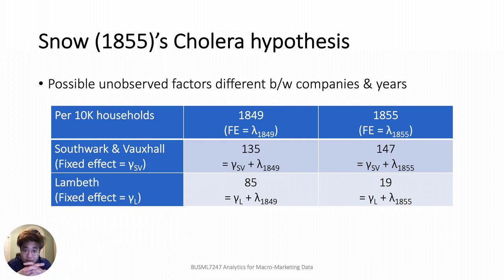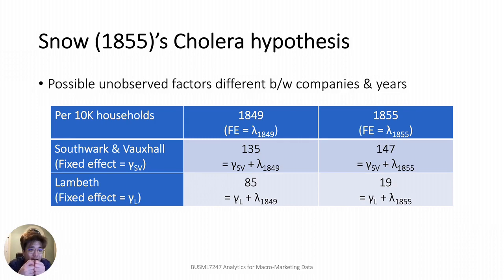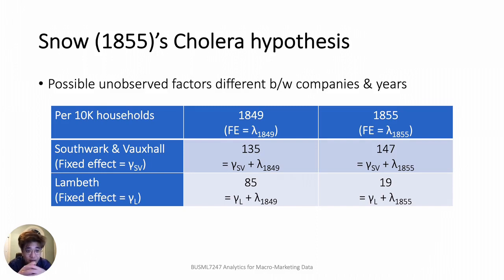Although the customers of the two companies were very similar, there could still be unobserved factors differing between the companies and between the years. Let γ_SV and γ_L be the company fixed effects, and λ_1849 and λ_1855 be the time fixed effects. Then we have equations where the death rate is given by the sum of the company fixed effects and the time fixed effects for each company and each year. For example, 135 for the Southwark and Vauxhall in 1849 is the sum of those fixed effects.